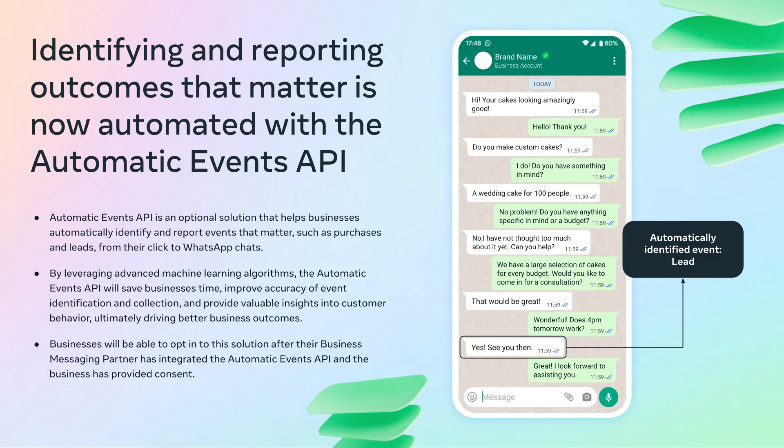This innovative solution is designed to help you automatically identify and report key events, such as purchases and leads, directly from your click-to-WhatsApp chats. By utilizing advanced machine learning algorithms, the Automatic Events API not only saves time, but also enhances the accuracy of event identification and data collection. This means you can gain valuable insights into customer behavior, ultimately leading to better business outcomes.